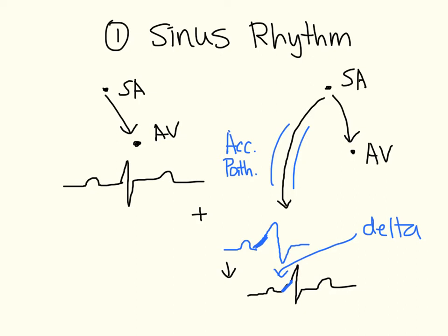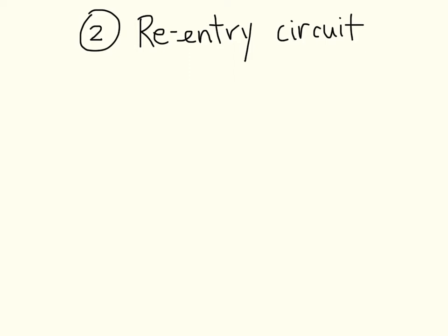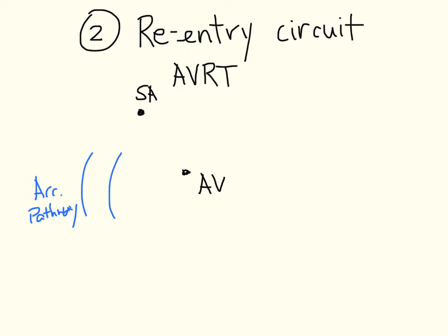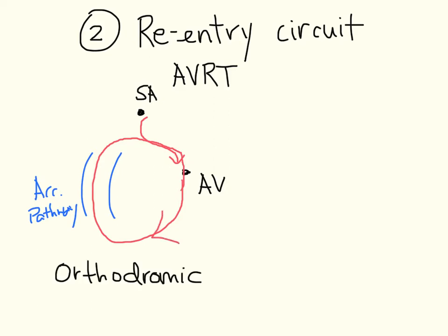The second scenario we want to look at is re-entry circuits — in particular AVRT, atrial ventricular re-entry tachycardia. The accessory pathway forms a loop which allows for circular movement of the impulses. It comes in two different forms. The much more common form involves impulses coming down from the SA node, through the AV node, going up the accessory pathway, and going through the AV node again, forming a circuit. This much more common form is called orthodromic conduction.